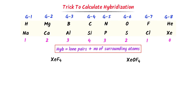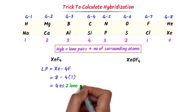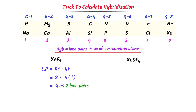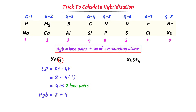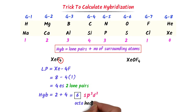Now let me teach you some hard-level questions. Calculate the hybridization of xenon in XeF₄. The central atom is xenon with 4 fluorine atoms. Group number of xenon (8) minus 4×1 = 4 electrons, meaning 2 lone pairs. Hybridization = 2 + 4 = 6 hybrid orbitals, meaning sp³d² (1s, 3p, 2d). So the hybridization of xenon is sp³d² and the geometry of this molecule is octahedral.